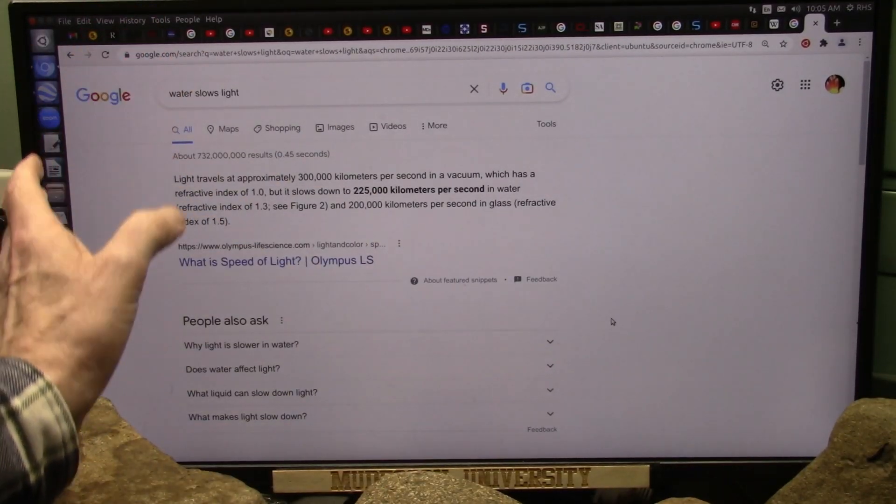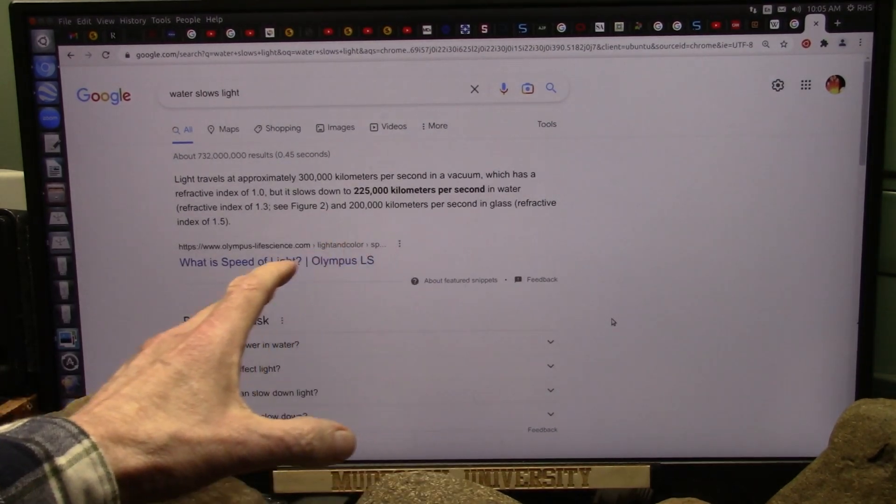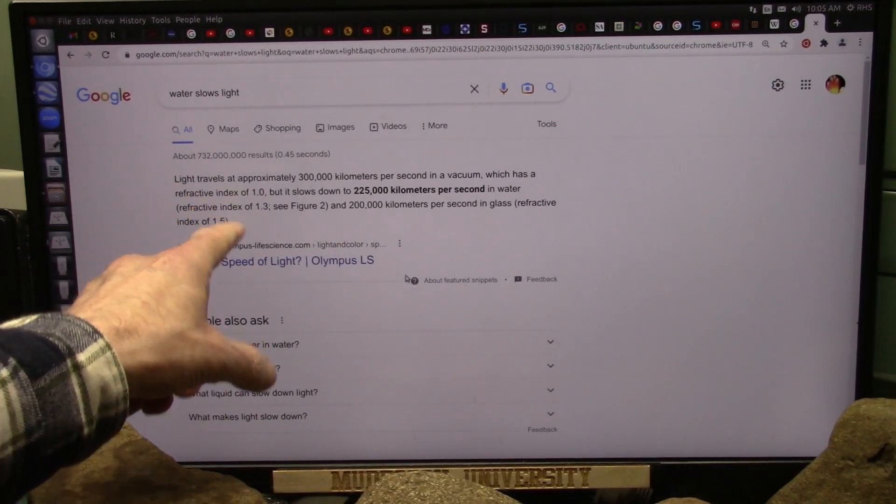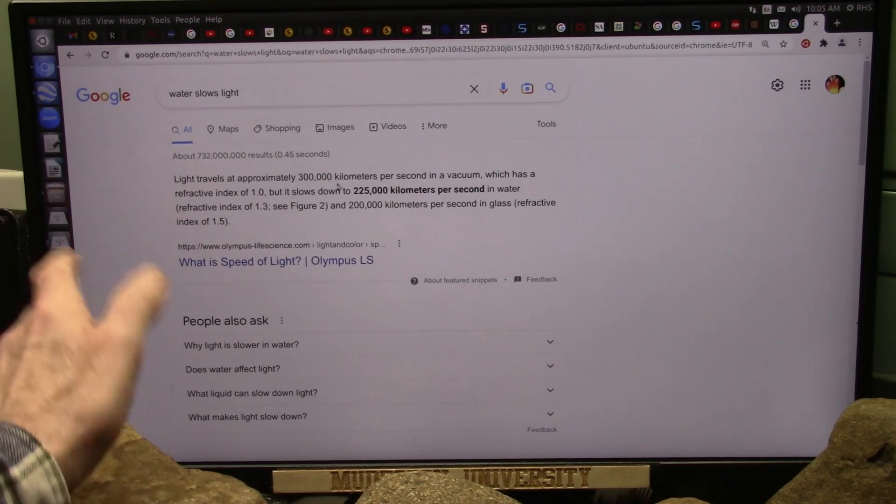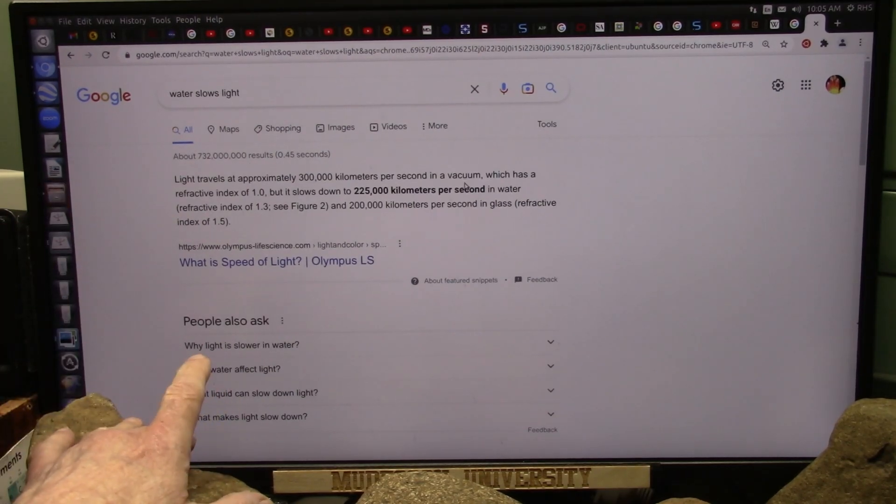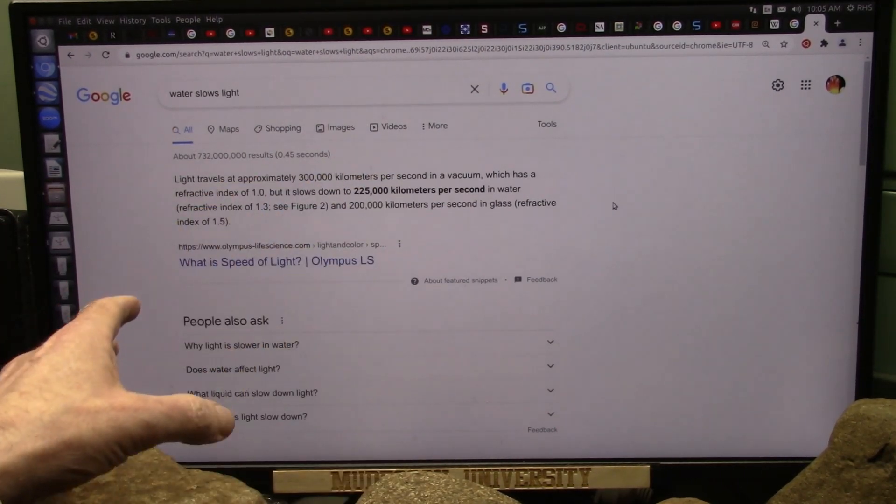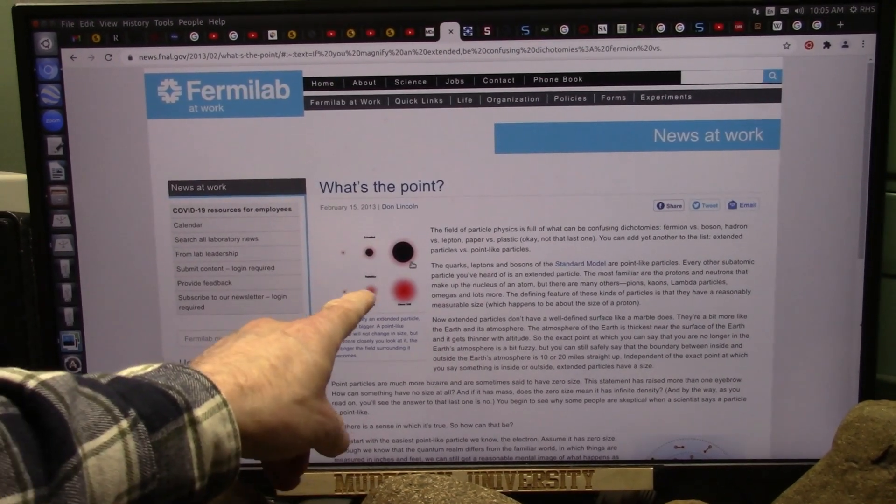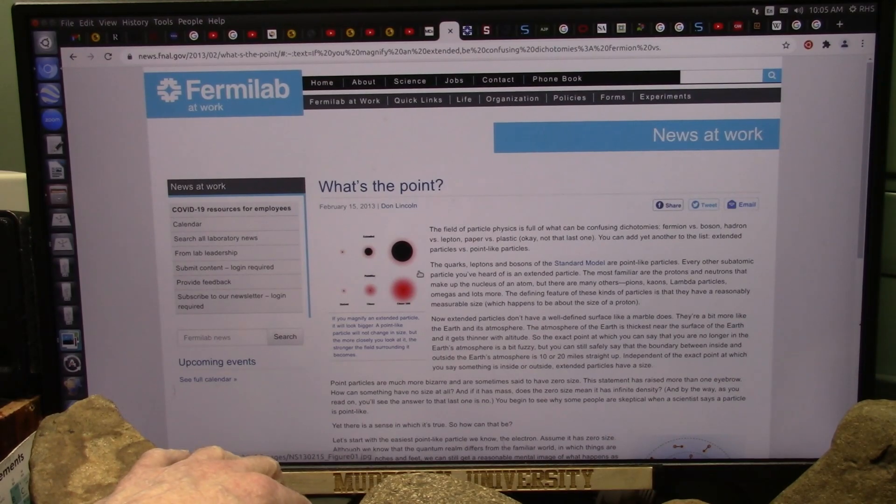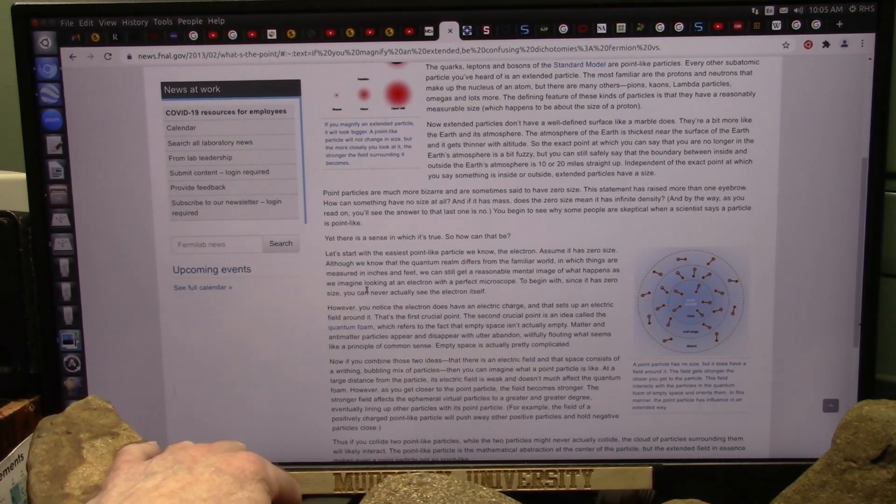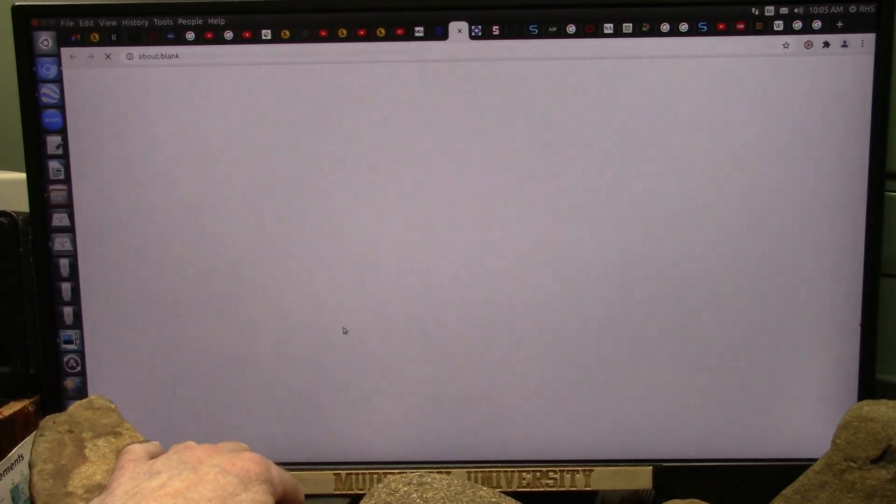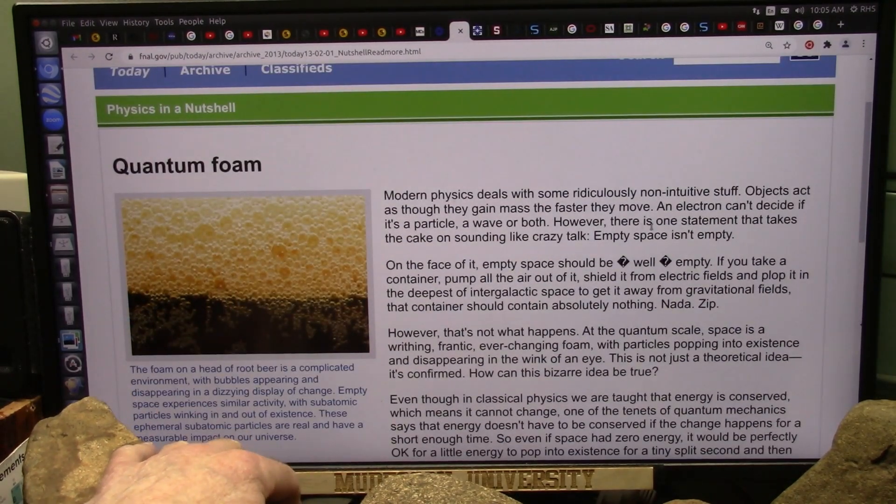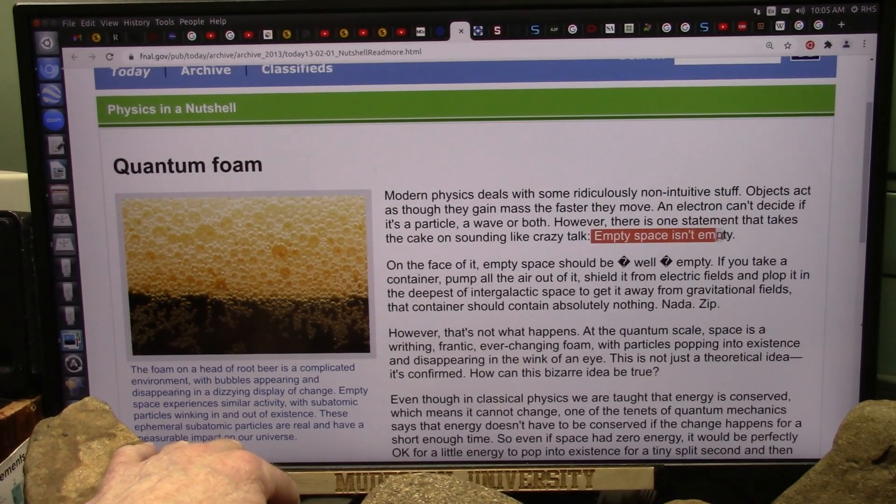Okay, we're saturated with dust and light particles everywhere. Light travels approximately 300,000 kilometers a second in a vacuum, which there's no vacuum in space whatsoever. Vacuum space is saturated with these exact particles that we have shown, and Don Lincoln calls them the quantum foam and he says that empty space isn't empty.